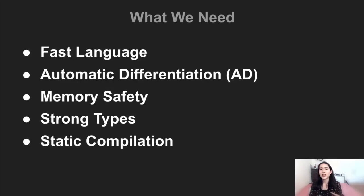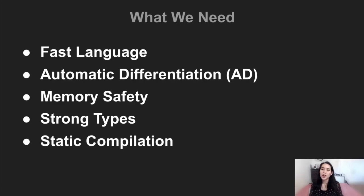So let's take a look at what we need to cover these other use cases. First, we'll need a fast language to write computationally intensive code wherever it is needed. Most popular frameworks today use Python as a surface language, which makes it inefficient to write custom logic. And of course, we'll need automatic differentiation, so users can obtain the gradients of their computations automatically.